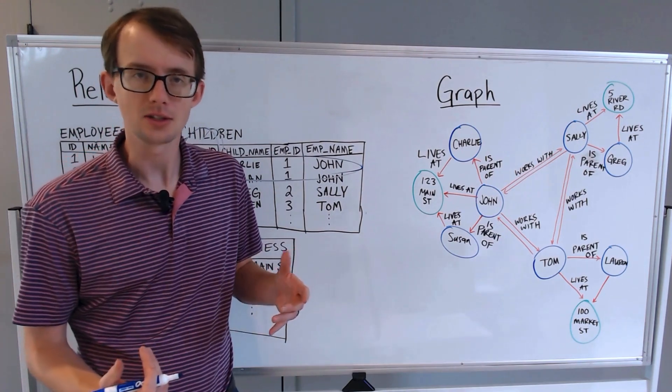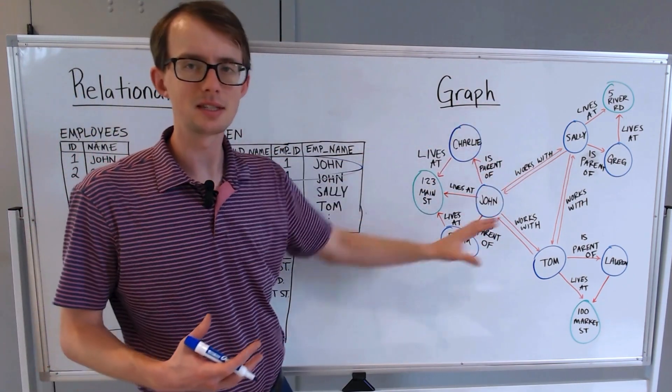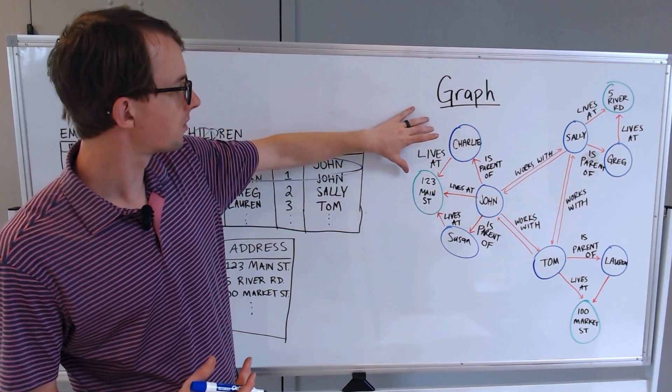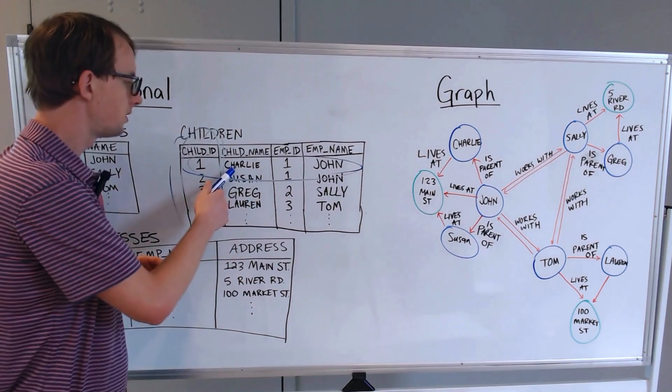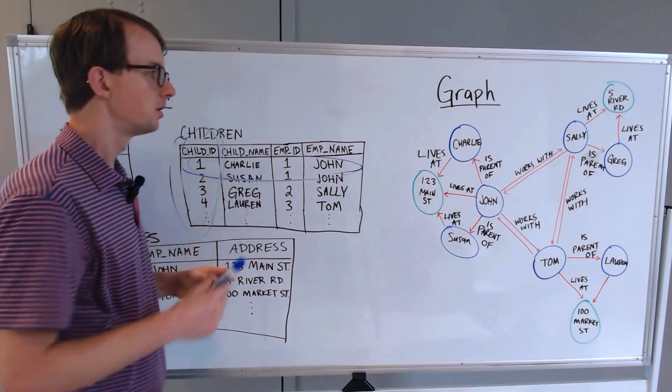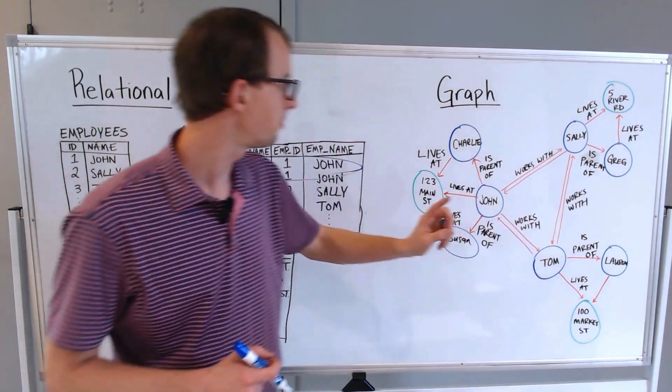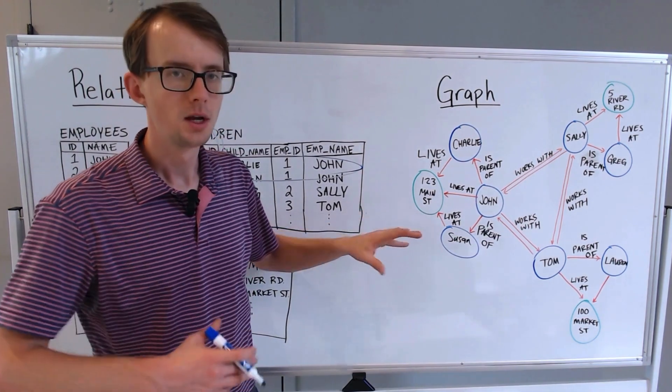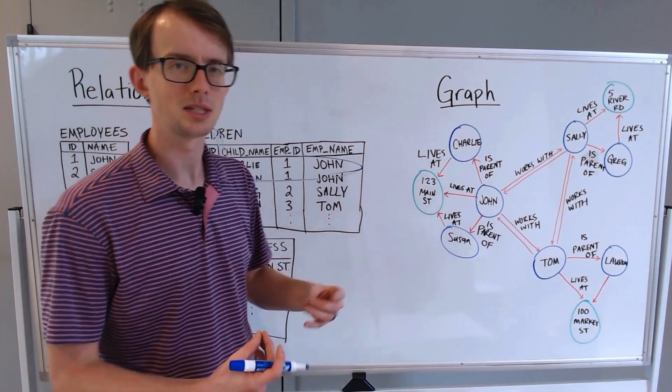What are nodes and edges? In this graph right here, the graph is just all of this information that we have stored. The nodes of the graph are the individual entities. You might think of this as the rows that we see here. We have the employees like John and Sally and Tom. We have their associated children and the addresses that they live at as well. The nodes are these circles and that's usually how we see them represented in a graph.